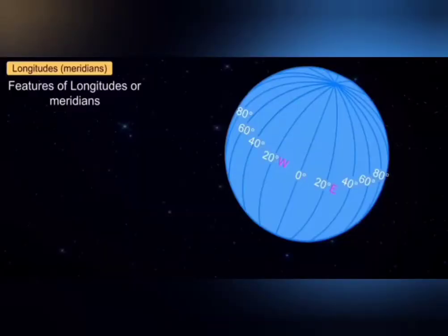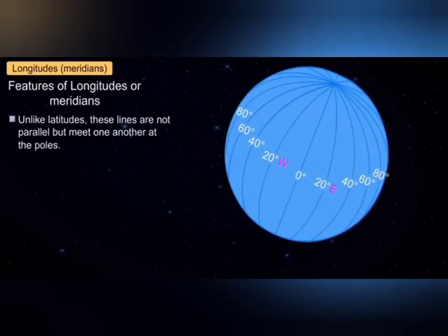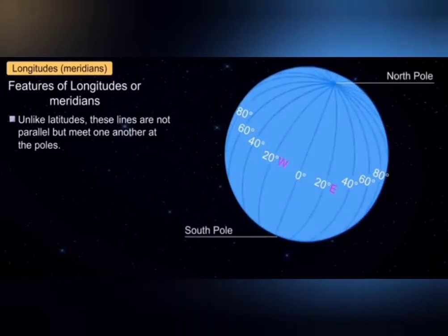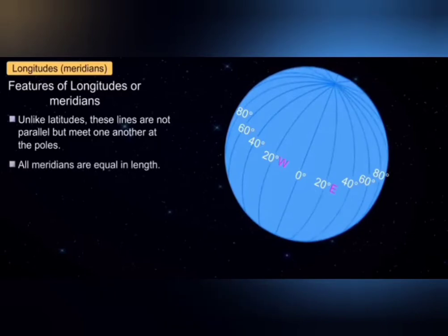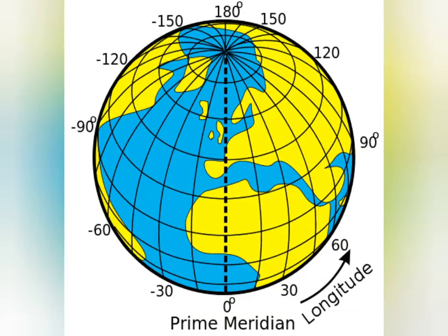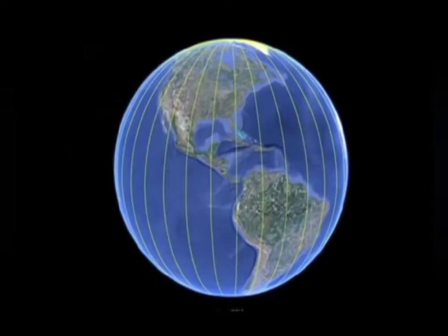There are a number of circles parallel to the Prime Meridian. Unlike latitudes, these lines are not parallel to each other but meet at the poles. All meridians are equal in length, and these lines are known as the degrees of longitude.